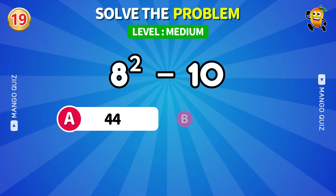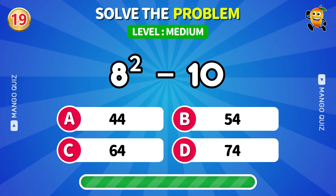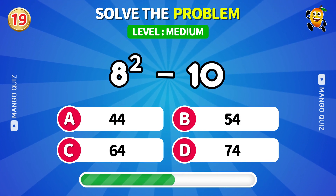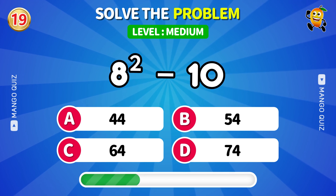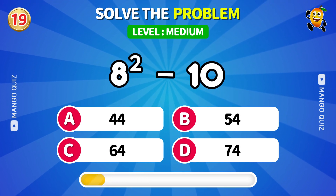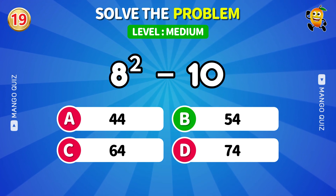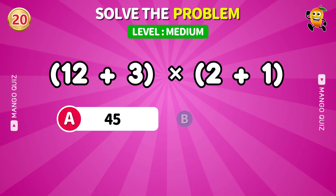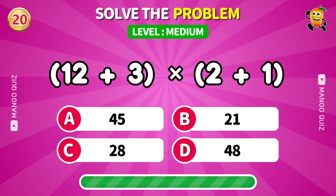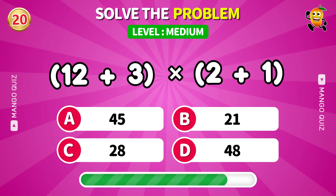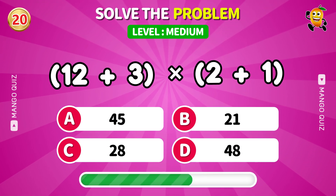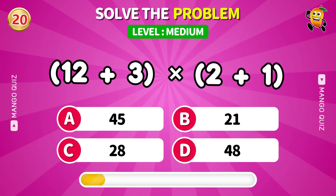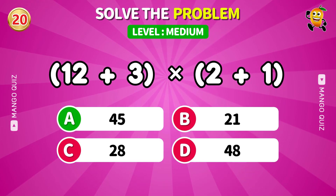8 squared minus 10. Answer: 54. Next: add 12 and 3 then times 2 plus 1. Answer: 45.